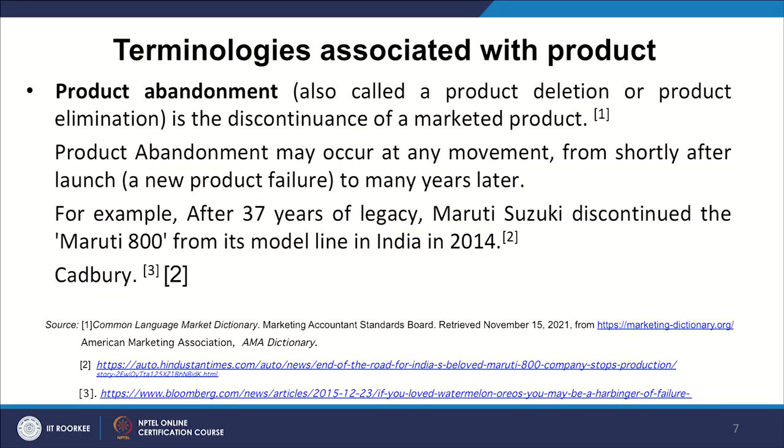For example, after 37 years of legacy, Maruti Suzuki discontinued the Maruti 800 from its model line in India in 2014 — that was a very thoughtful effort. It took a long time for them to take it away from customers and bring in a substitute. It was a deliberate strategic exercise — that is where I call it exiting the product. Supporting the product towards the end of its life cycle and bringing a newer substitute — it may be seen with the perspective that it was exited from a position where the other substitute picked up and grew.